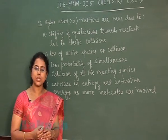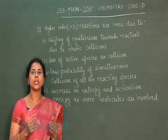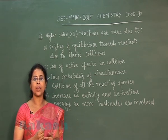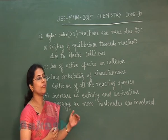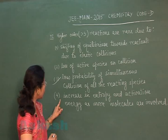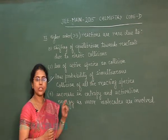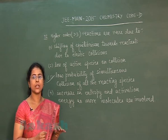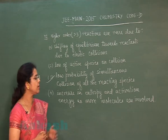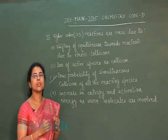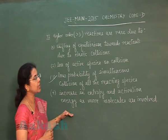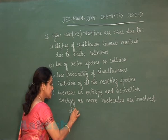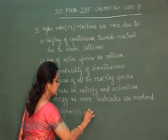The third option — low probability of simultaneous collision of all reacting species — is correct. For any reaction to proceed, simultaneous collision of particles is necessary, and simultaneous collision of more than 3 particles is highly unfavorable, so probability decreases. The fourth option — increase in entropy and activation energy — is incorrect, as activation energy is fixed and entropy may increase or decrease. So option 3 is correct.